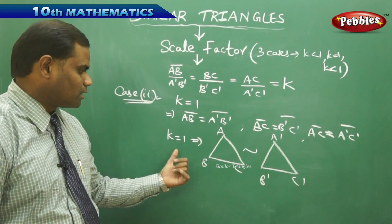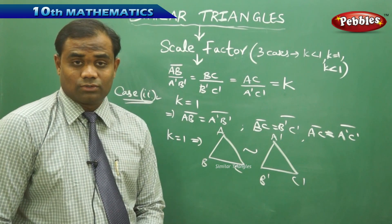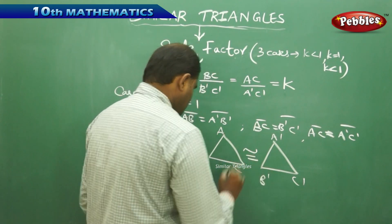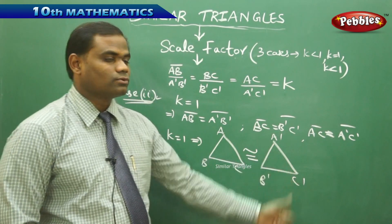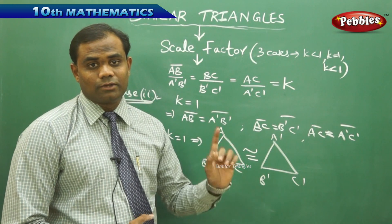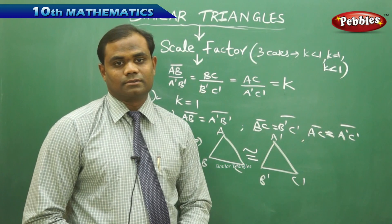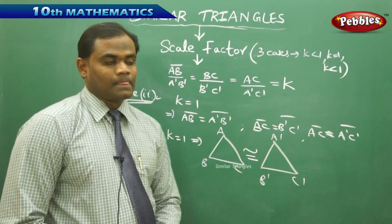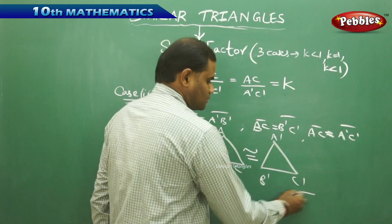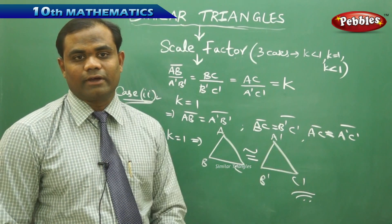When k is equal to 1, the two triangles are congruent. Similarity reduces to congruency — that is how we understand the difference. So k equal to 1 implies the two triangles are congruent, which is Case 2 of the scale factor.